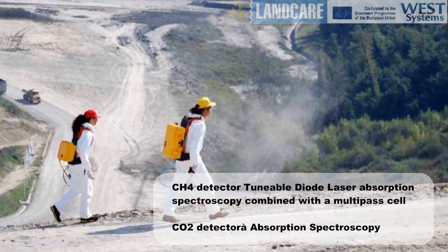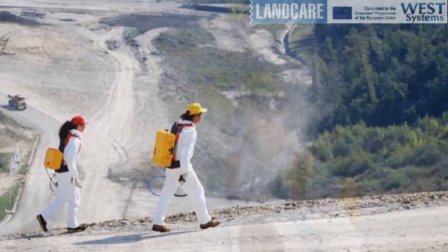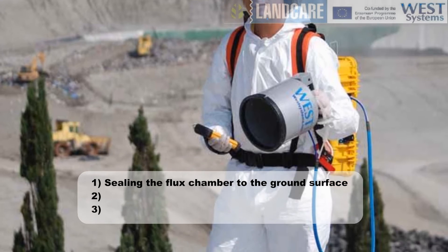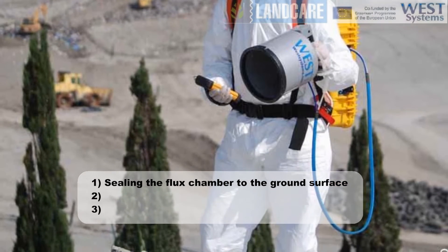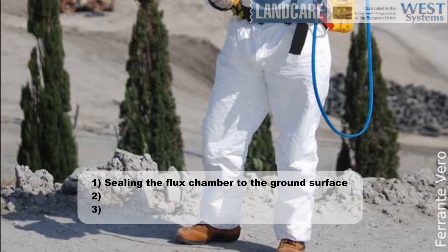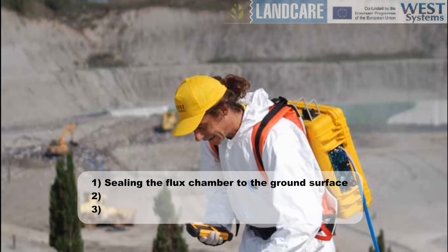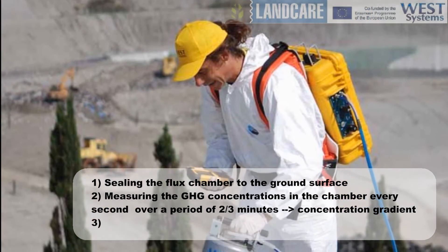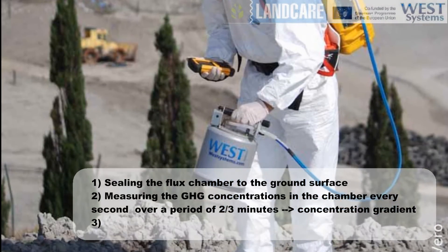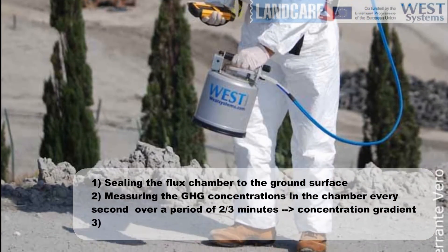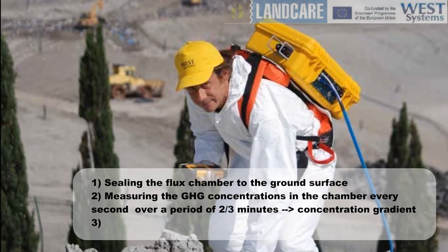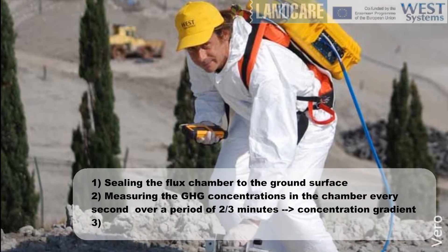The accumulation chamber procedure consists of the following steps for each sampling point. Step 1: sealing the flux chamber to the ground surface. An effective seal between the accumulation chamber and the soil surface will depend on soil characteristics. Step 2: measuring the GHG concentrations in the chamber every second over a period of 2 to 3 minutes. The concentration versus time curves are fitted by applying a linear best fit to compute the concentration gradient.